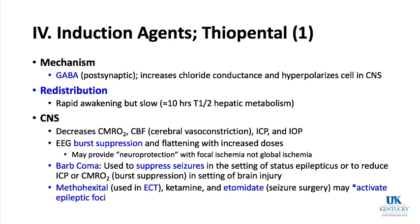Moving on to IV induction agents, starting with thiopental, which is very rarely used anymore. Methohexital is another barbiturate. Both are still part of the ABA content outline. Barbiturates work at the GABA receptor, increasing chloride conductance and hyperpolarizing CNS cells. They redistribute rapidly away from the brain — the reason you awaken after IV induction agents is redistribution, not metabolism. Barbiturates are broken down very slowly; the half-life of hepatic metabolism is about 10.5 hours, explaining prolonged grogginess after an induction dose.